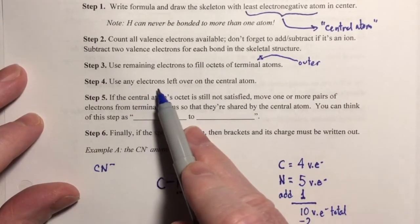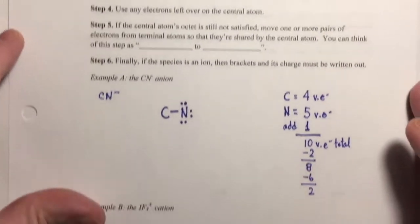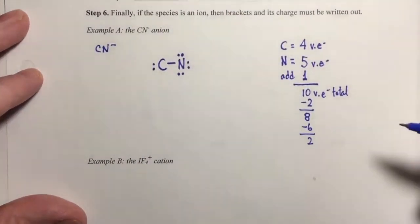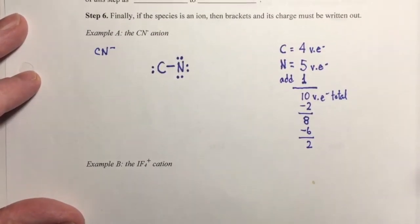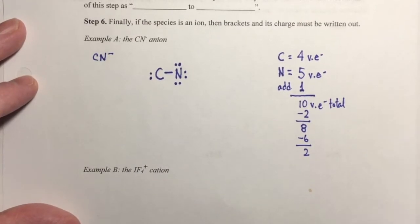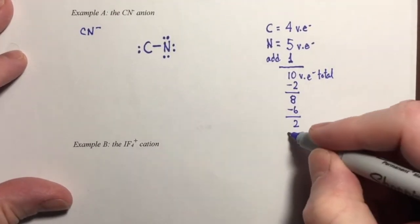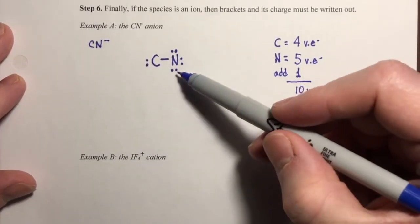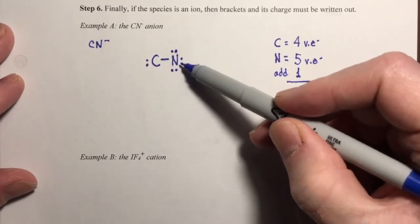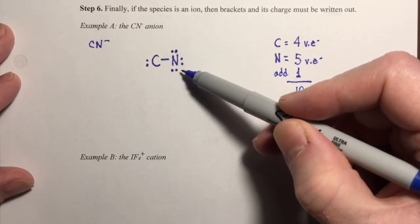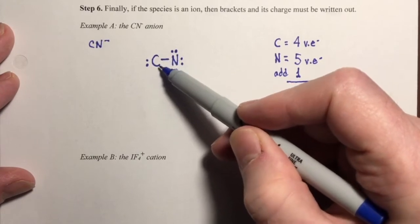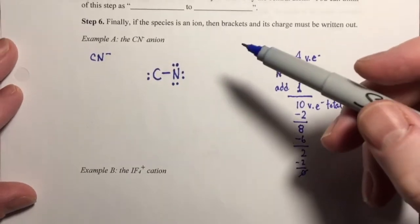Step four: use any electrons left over on the central atom. I have two remaining, and I'll place them on carbon so it's obvious they're associated with the central atom. Now you'll notice: this nitrogen has a filled octet and is electronically stable, but carbon only has four electrons around it and is not stable. That leads us to step five.